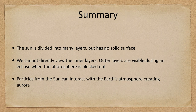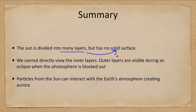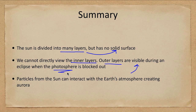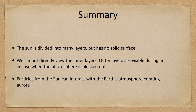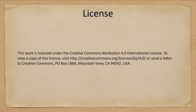To summarize, we looked at many layers of the Sun, but there is no solid surface anywhere. We cannot directly view the inner layers and have to use various methods to interpret what they must be like. The outer layers are visible during an eclipse when we block out the photosphere, allowing us to see fainter outer layers such as the chromosphere and corona. Particles from the Sun can interact with Earth's atmosphere, causing the aurora. That concludes this lecture on the structure of the Sun — we'll be back next time for another topic in astronomy.